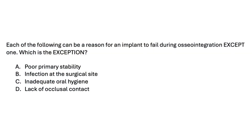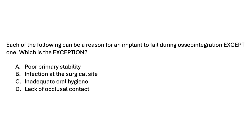Here is the second practice question: each of the following can be a reason for an implant to fail during osseointegration except one — which is the exception? A. Poor primary stability, B. Infection at the surgical site, C. Inadequate oral hygiene, or D. Lack of occlusal contact. Let's decode this tricky except-style question. Whenever we're dealing with except, the goal is to eliminate the answers that fulfill the question stem. Starting with A, poor primary stability: primary stability is the immediate mechanical stability of an implant right after placement. Poor primary stability is a common contributing factor to poor secondary stability, which is osseointegration, leading to early implant failure. So this is definitely a reason for osseointegration failure — we rule it out.